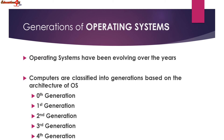Computer operating systems can be divided into five generations, starting from the 0th generation to the fourth generation. Let us see the various generations and characteristics of each generation.